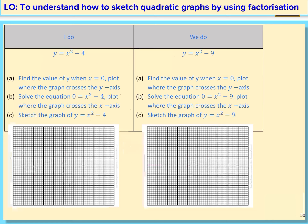Let's have a go at this one. With this one, I personally would not bother factorizing. I would just go straight to making x equal zero to find the y-intercept, then making x the subject. Let's follow these steps: find the value of y when x equals zero — that is, the y-intercept — and that is y equals negative 4.